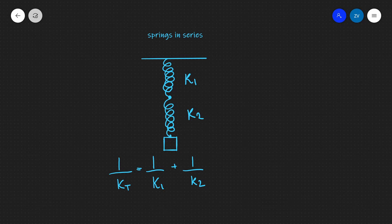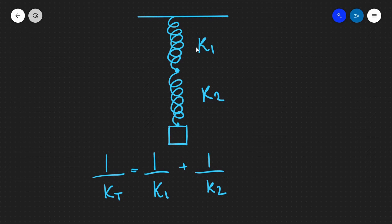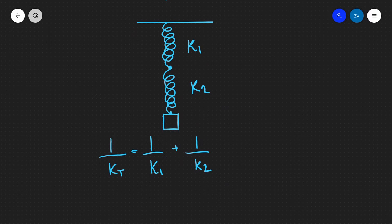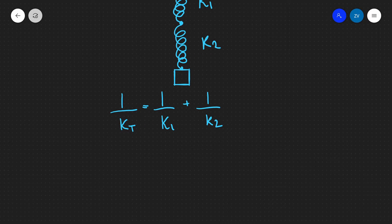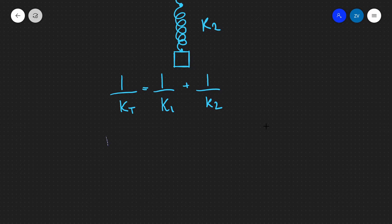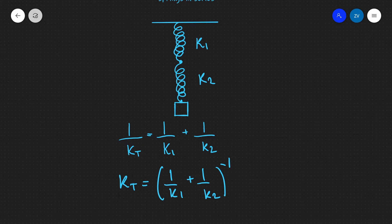What we're going to be looking at today is springs in series and also springs in parallel. If we were to attach two springs together with spring constants k1 and k2, there will be a resulting spring constant — we're going to call that k total. This combination of springs will act like a single spring, given by the equation: 1 over k total equals 1 over k1 plus 1 over k2, or equivalently, k total equals (1/k1 + 1/k2) raised to the power of minus 1.